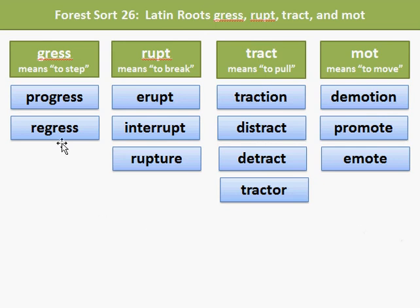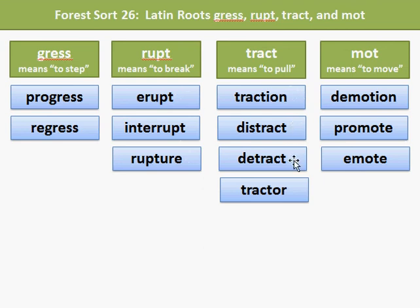Our sample words for gress included progress and regress, meaning to step. Rupt, meaning to break, was found in erupt, interrupt, and rupture. Tract means to pull and is found in traction, distract, detract, and tractor. And mote was found in our sample words demotion, promote, and emote.